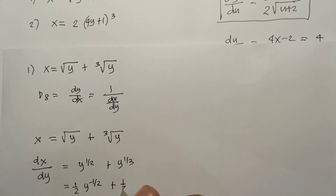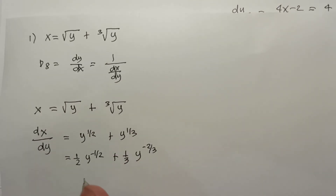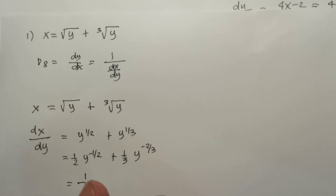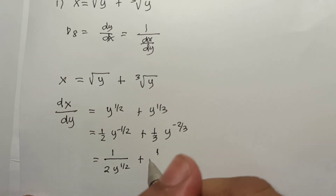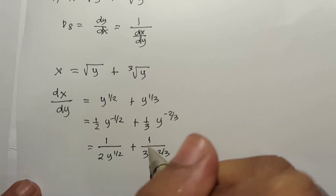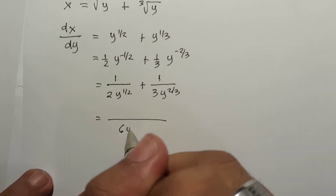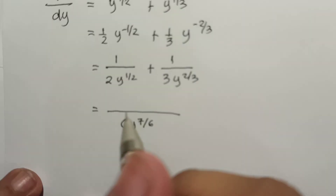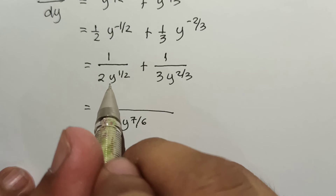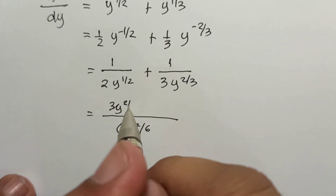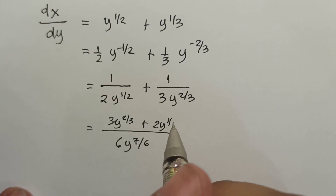So dx/dy = (1/2)y^(−1/2) + (1/3)y^(−2/3), which is 1/(2√y) + 1/(3y^(2/3)). To combine these fractions, find the LCD of 6: the result is [3y^(2/3) + 2y^(1/2)] / (6y^(7/6)).